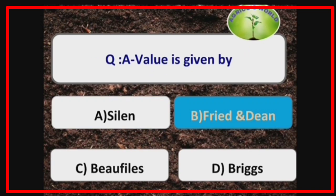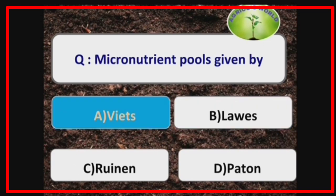A-value was given by Fryer and Dean to determine both sulphur and phosphorus. Micronutrient pools concept was given by Weeds.